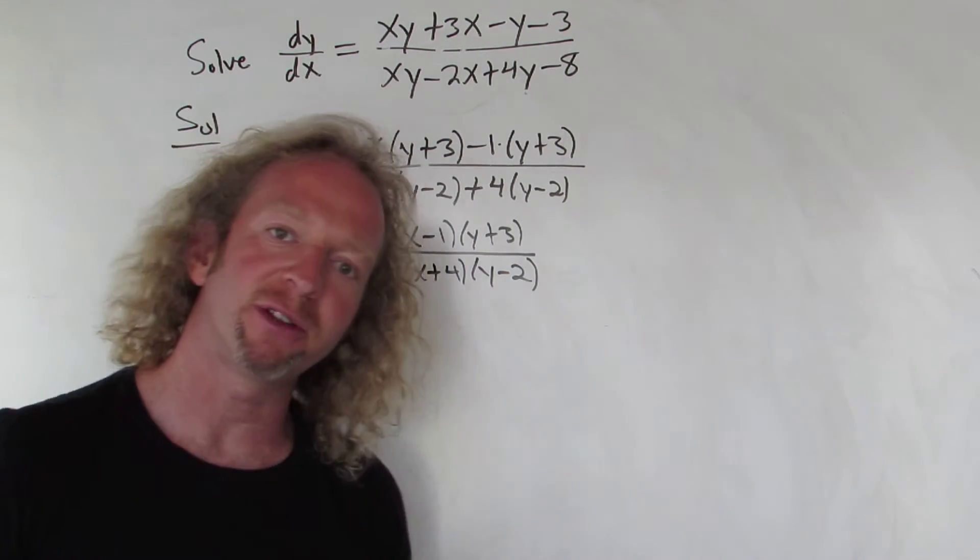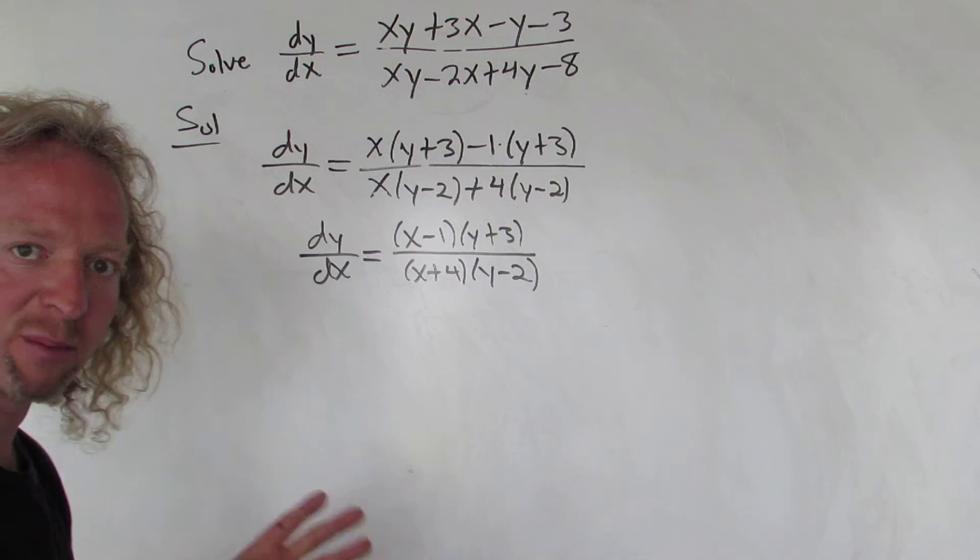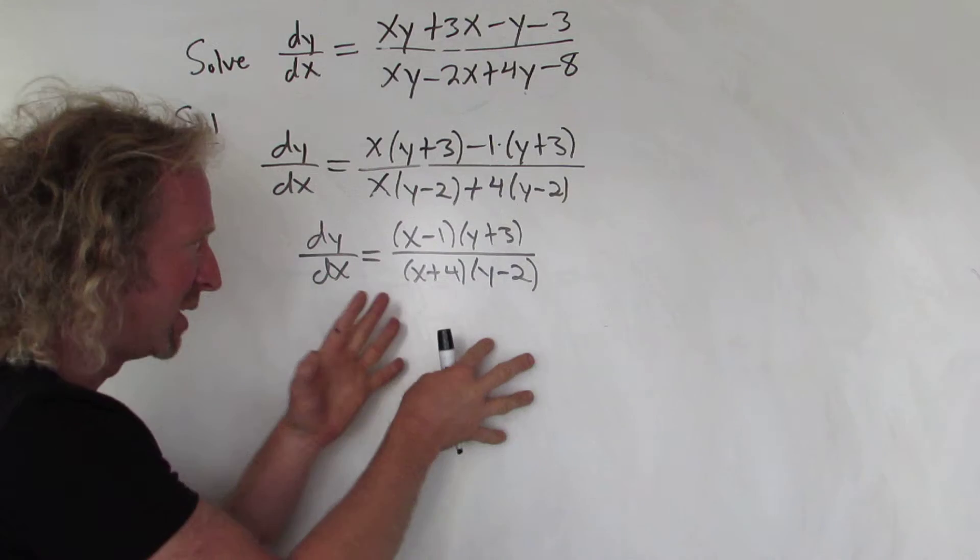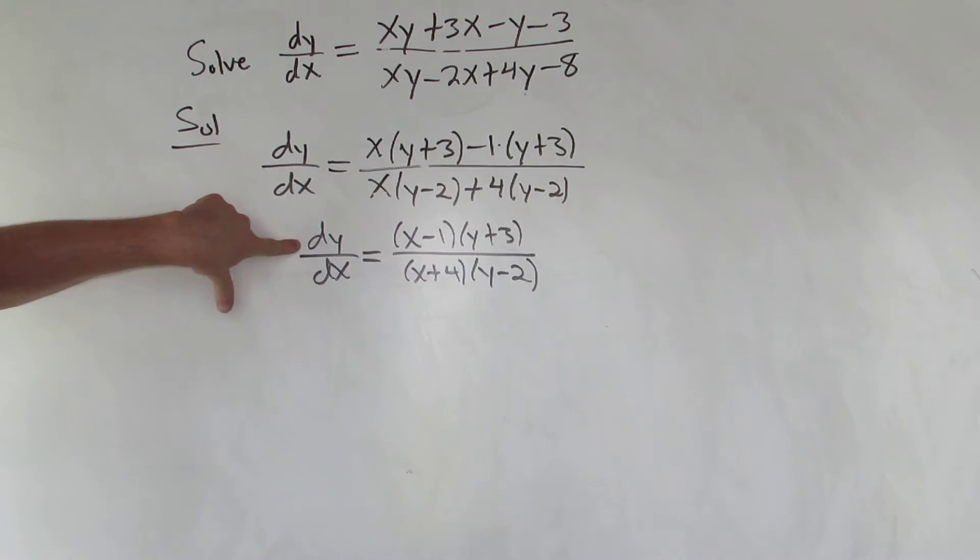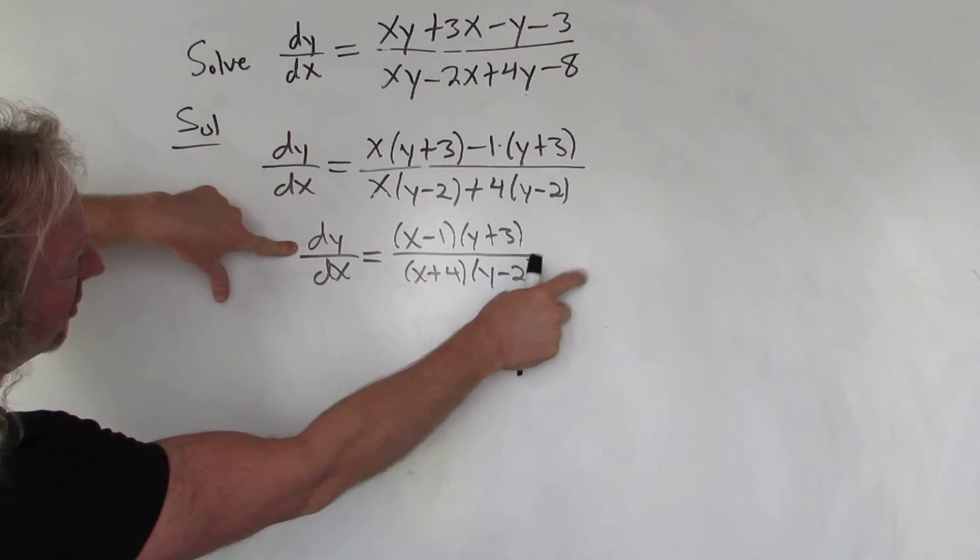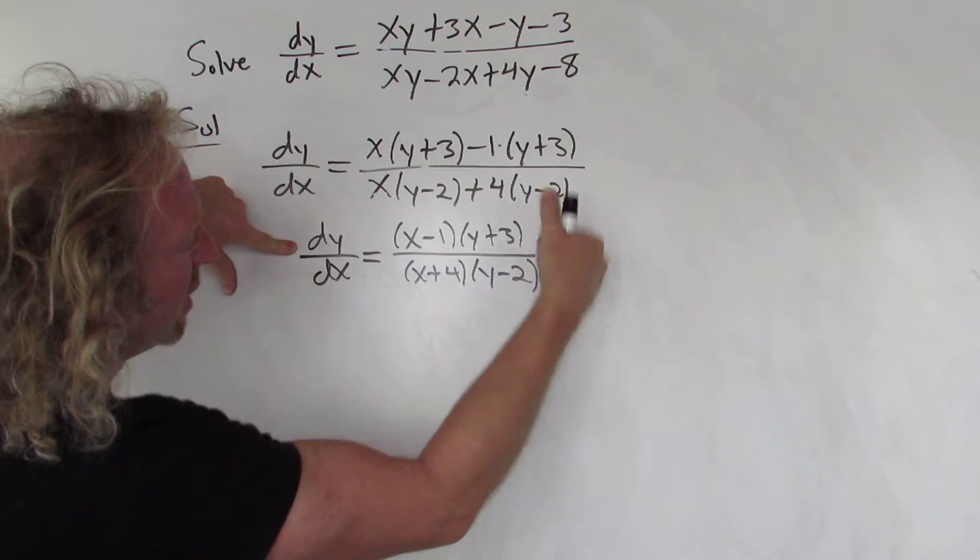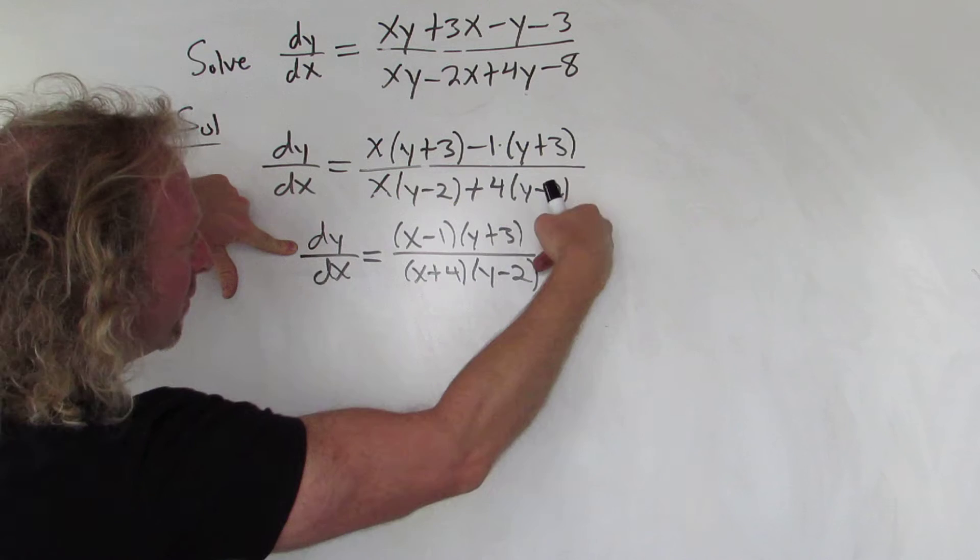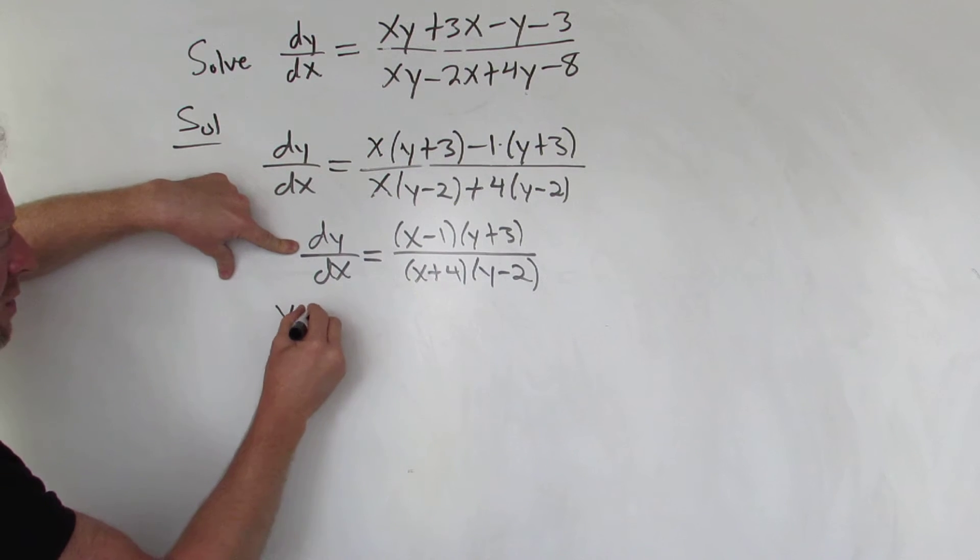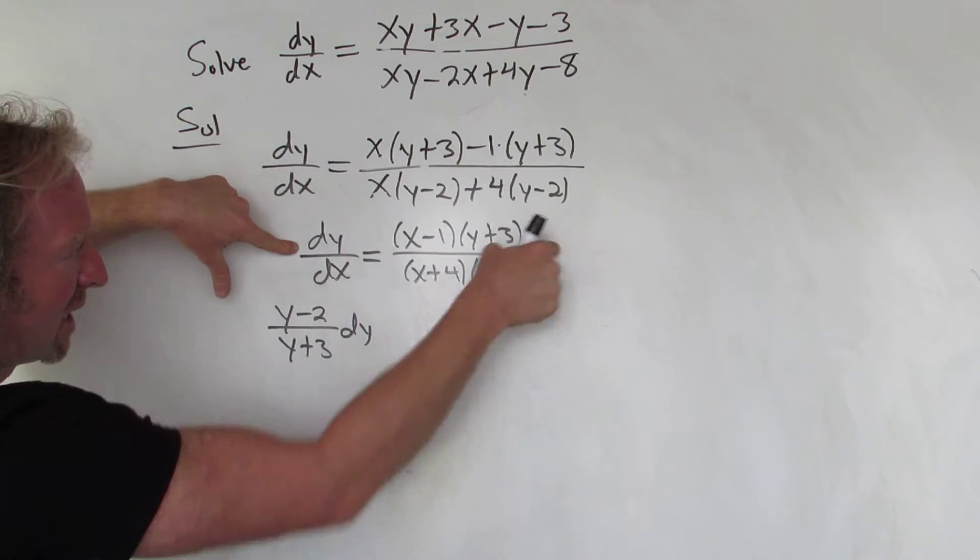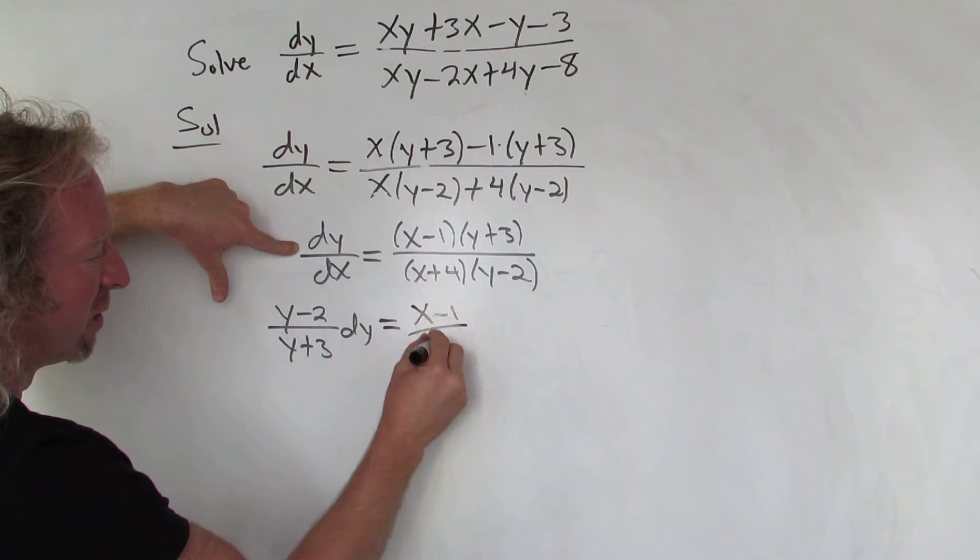And now we can separate it. This is a separable differential equation. The goal is to have some stuff with x dx equal to some stuff with y dy. The dy is here so we only want y's over here, and we're going to multiply by dx to put that on this side. So we multiply by the reciprocal: (y-2)/(y+3) dy equals (x-1)/(x+4) dx.